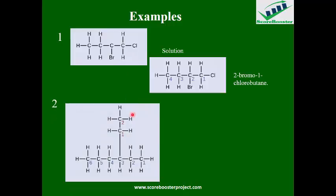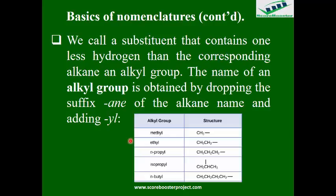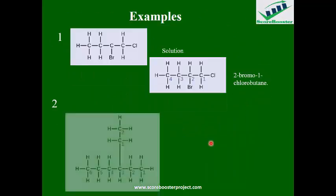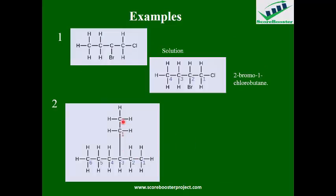Another example: don't be intimidated. Count the longest chain — you can find six carbons. There is also an ethyl substituent (CH3CH2 group). Counting from one end, the substituent is on carbon four — giving 4-ethylhexane. Counting from the other end, it is on carbon three — giving 3-ethylhexane. Three is less than four, so the correct name is 3-ethylhexane. Always use the direction that gives the substituent the smallest number.